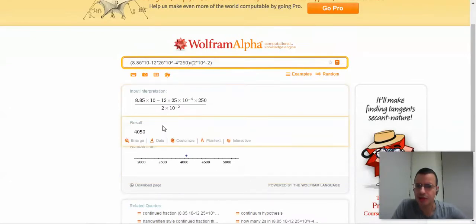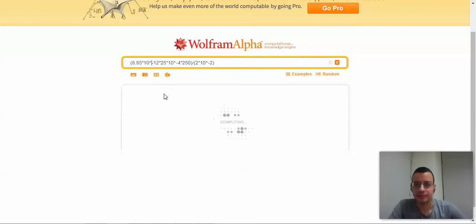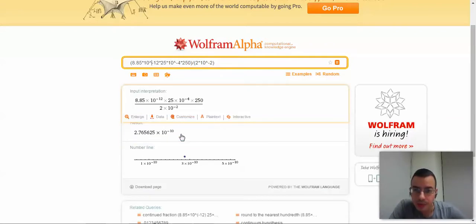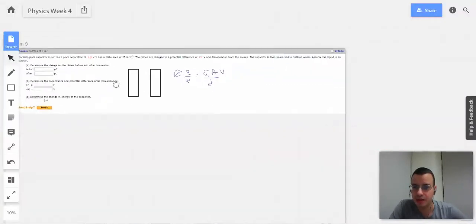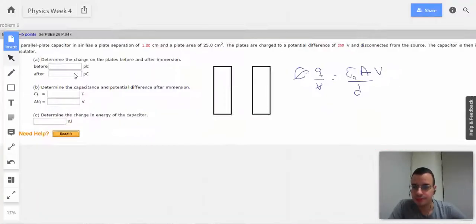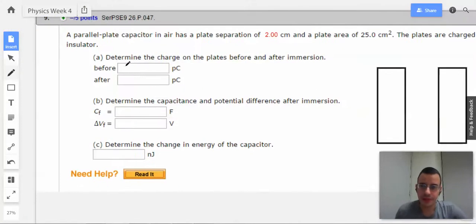Times the voltage which is 250, divided by the distance between the two, which is 2 times 10 to the negative 2nd. And this should give us our charge on each plate. I'm going to call that 2.77 times 10 to the negative 10th. Oh, they want it in pico, so I'll call it 277 pico coulombs.